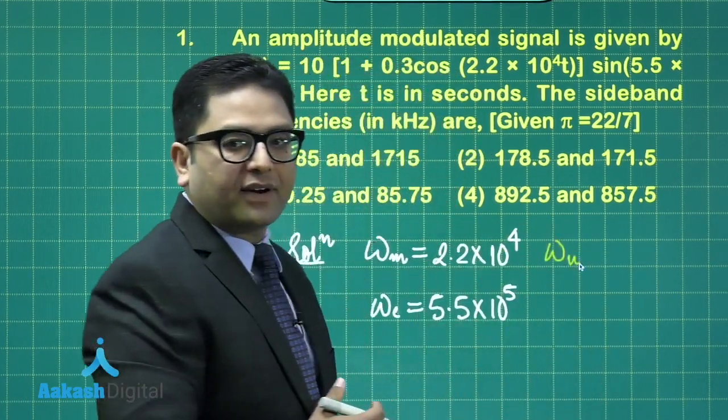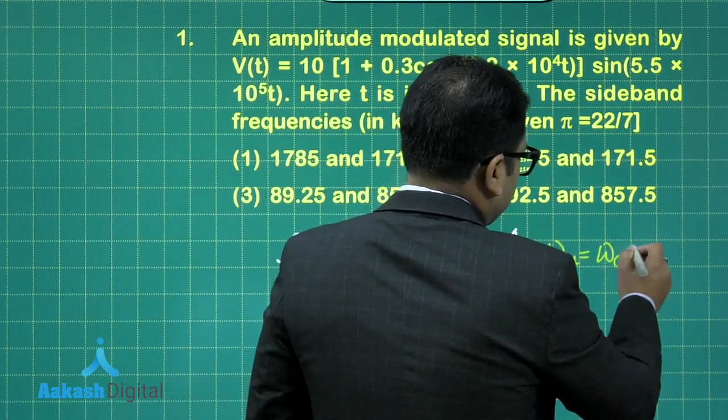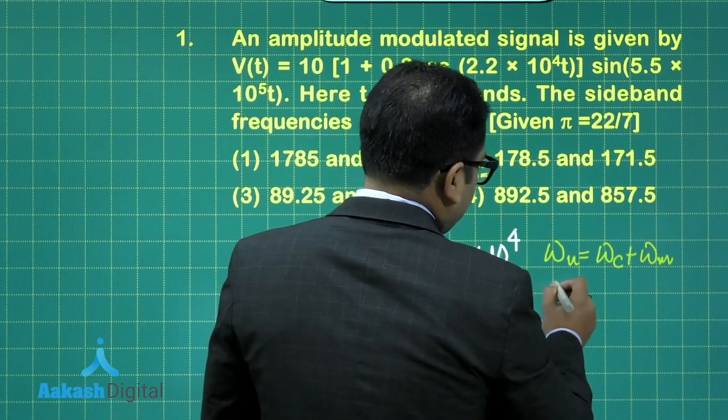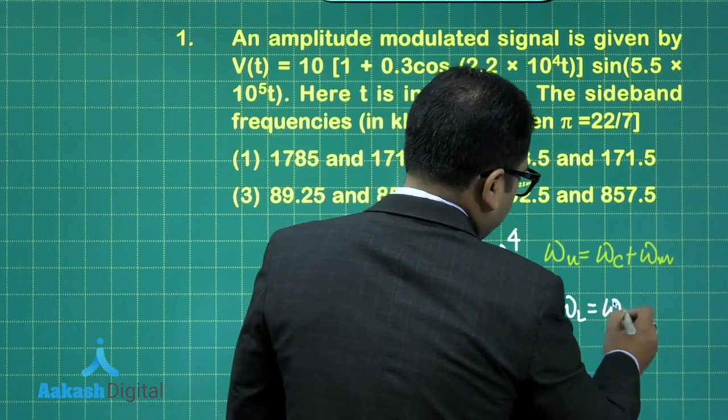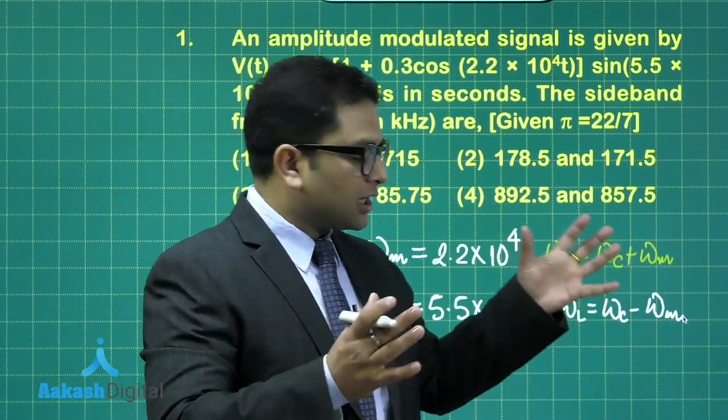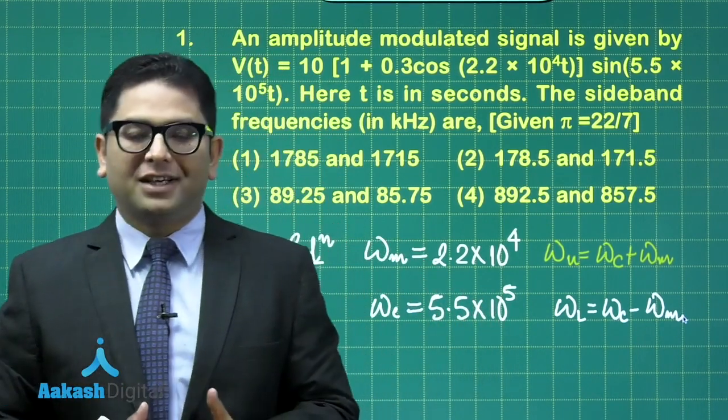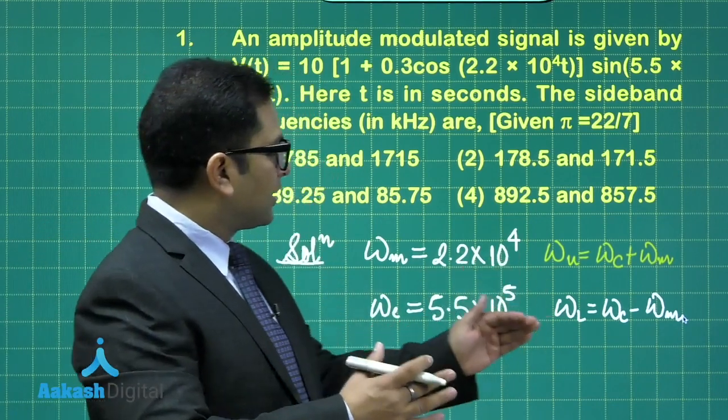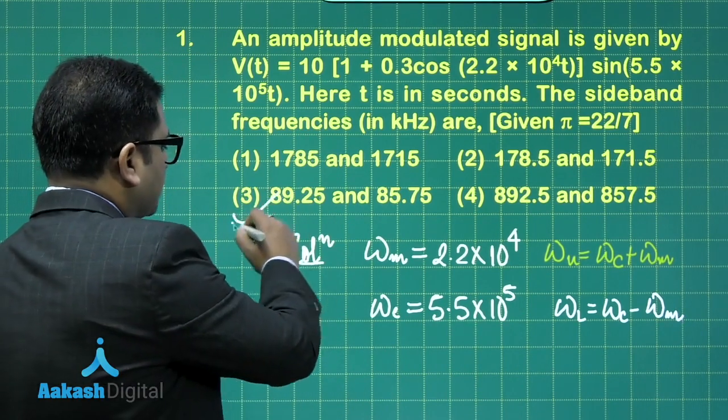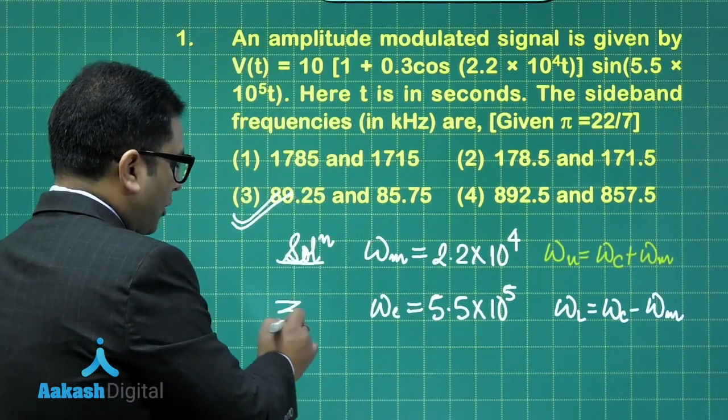That is equal to 5.5 into 10 raised to the power 5, of course, radiant per second. Now we know that goes in a very straightforward formula that the sideband frequencies, the upper sideband and the lower sideband. So omega upper sideband is going to be omega c plus omega m. And likewise, if I want to calculate the lower sideband, that omega l is going to be omega c minus omega m. And once you get the value in terms of omega, don't forget to convert in terms of frequency, which is simple, omega divided by 2 pi. So upon doing that, the upper and the lower sideband and subsequently divided by 2 pi, the correct answer is going to be option number 3. So question number 1 has correct option as option number 3.